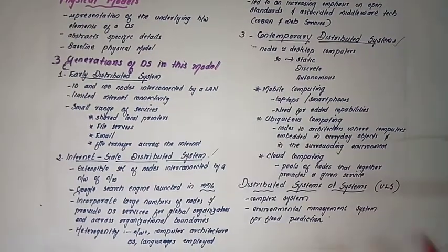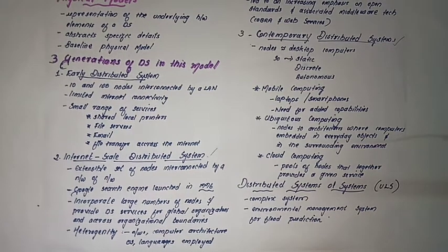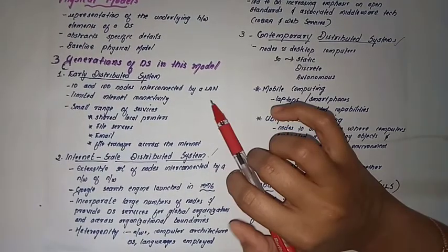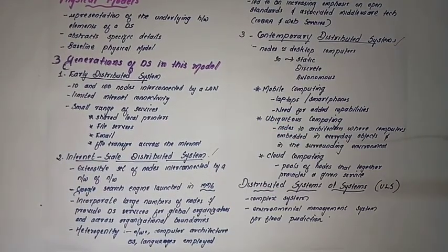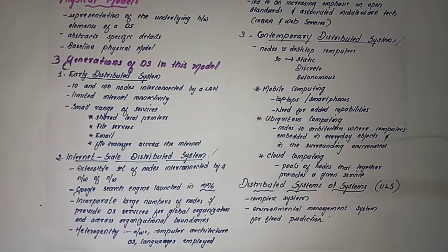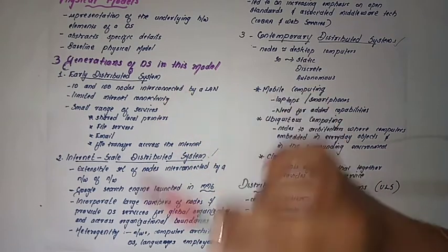In the early distributed system, we have 10 to 100 nodes interconnected by a LAN — a local area network. The maximum was around 100 nodes connected together. In the early days, this was how distributed systems were used.